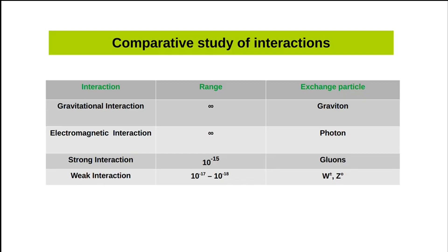For gravitational interaction, the range is infinite, meaning gravitational interaction can be felt at infinite distances, and the exchange particle is the graviton. For electromagnetic interaction, the range is also infinite and the exchange particle is the photon.